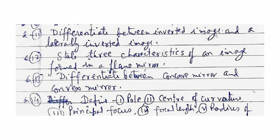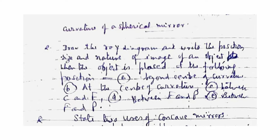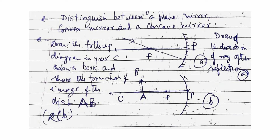Define the pole, center of curvature, principal focus, focal length, and radius of curvature of a spherical mirror. Draw the ray diagram and write the position, size, and nature of image of an object when the object is placed at: (a) beyond center of curvature, (b) at center of curvature, (c) between C and F, (d) at F, (e) between F and P. State two uses of the concave mirror and differentiate between a plane mirror and a concave mirror.